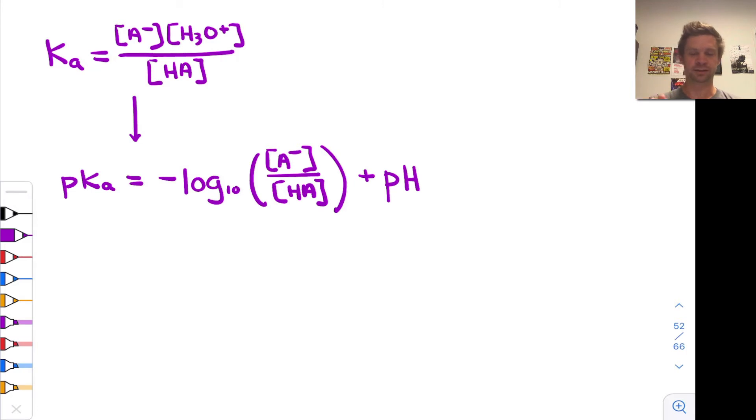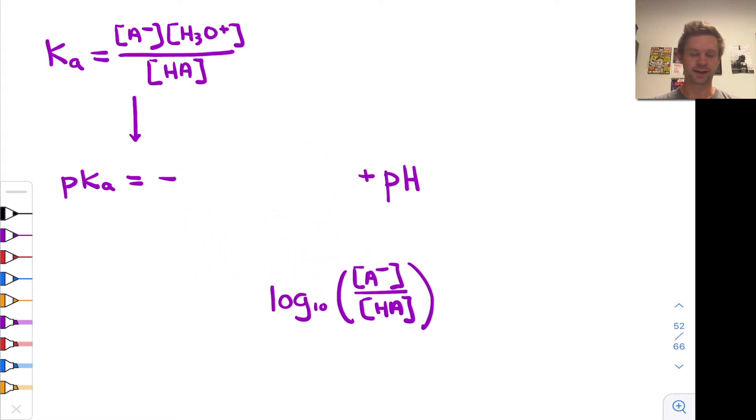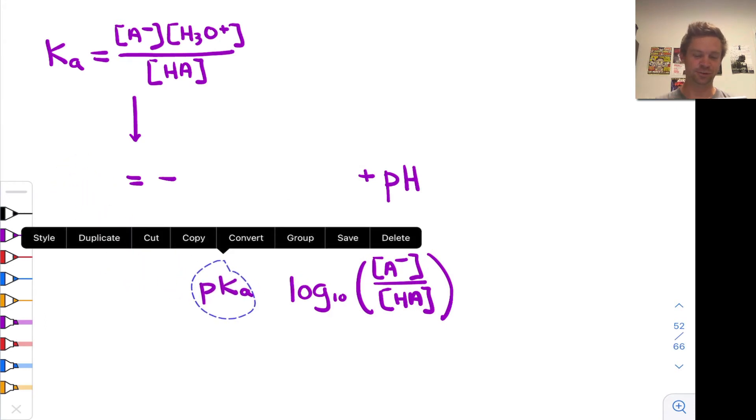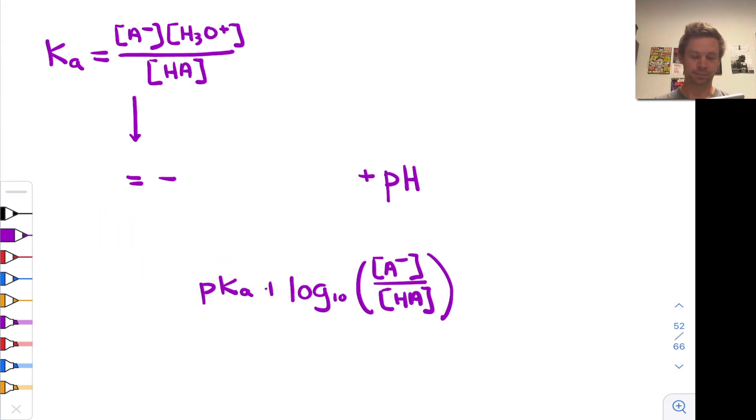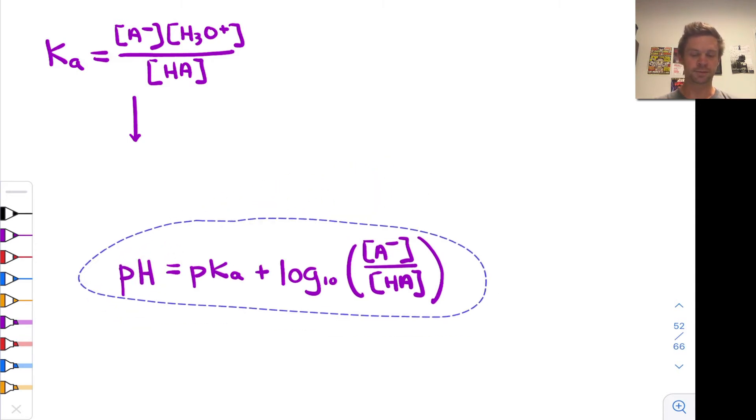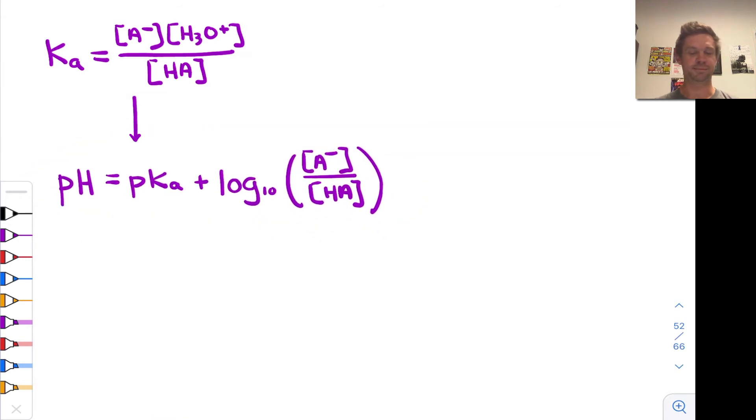We can rearrange things a little bit to arrive at a version that's going to be more convenient for us by moving this logarithm term to the other side of the equation. So I'm going to do that, and actually move that side to the right and put pH on the left, and the result is that the pH of a buffer solution is equal to the pKa plus the base 10 logarithm of A- divided by HA.